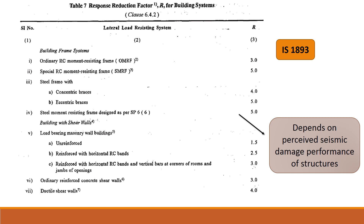The table goes on to discuss steel frames with concentric braces and eccentric braces where R is 4 and 5, and steel moment resisting frames designed as per SP6 where R is taken as 5. Other buildings with shear walls are also covered. The full table is larger than what is shown here; for reference you can look at IS 1893.